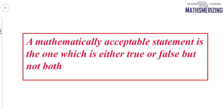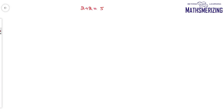Mathematical reasoning starts with something called a mathematical statement. Any statement which can be answered as certainly true or certainly false is called a mathematical statement or mathematically acceptable statement. For example, the statement '2 plus 2 equals 5' — we know that 2 plus 2 is not equal to 5, and this is certainly false, so this statement is a mathematically acceptable statement.